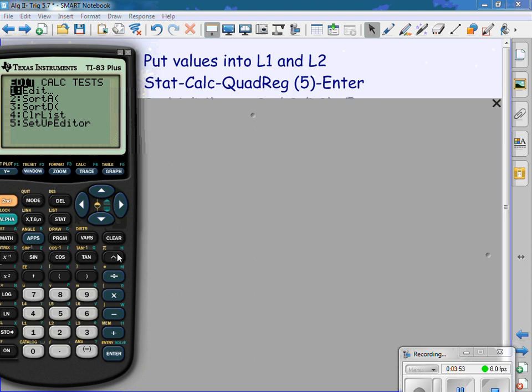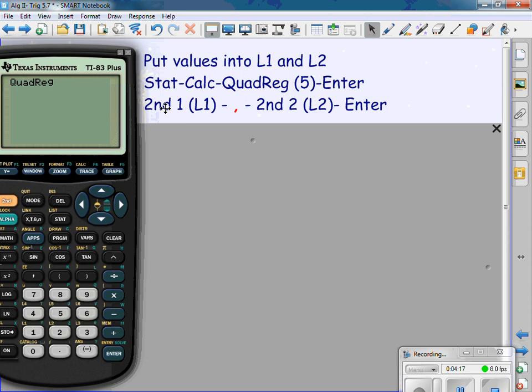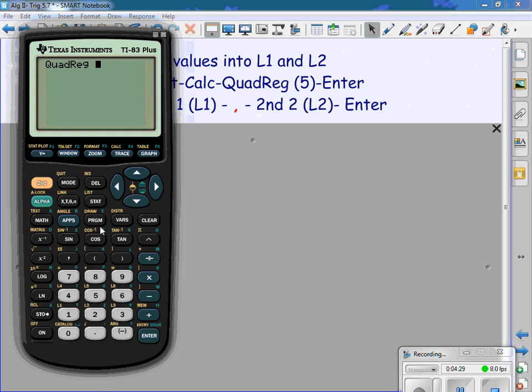Press stat. Go over to calc. Earlier in the year, we used linear regression. Now, we're using quadratic regression. So, 5. Now, most of our stuff is in L1 and L2 already. You don't have to do this if this is in L1 and L2. The calculator default is L1, L2. If I had my stuff in 3 and 4, I'd have to tell the calculator. Here, second one, comma, second two. I don't have to do this, though. This stuff doesn't have to be there.